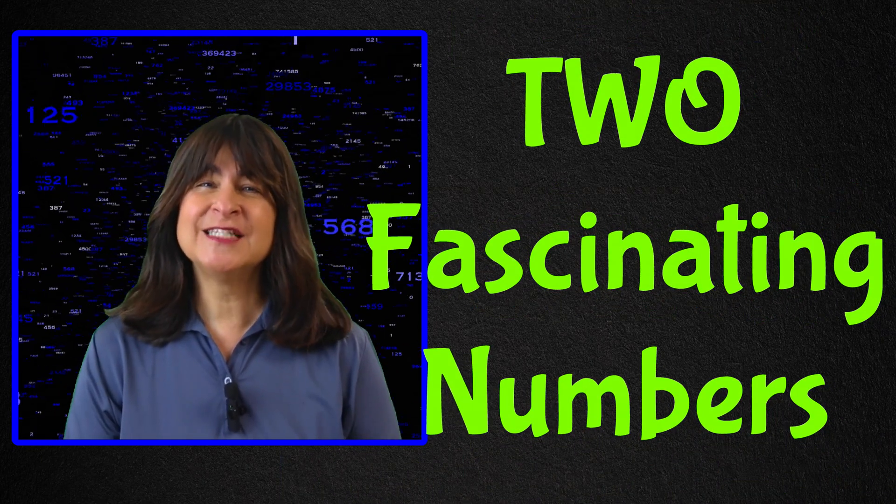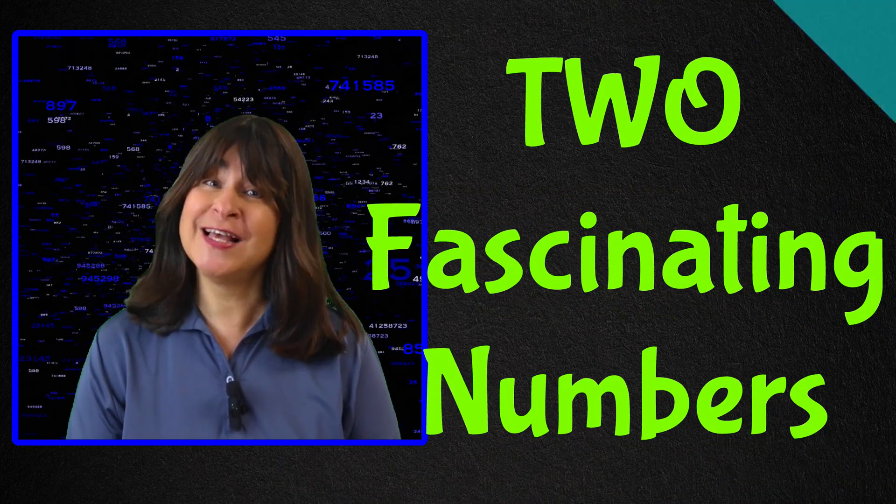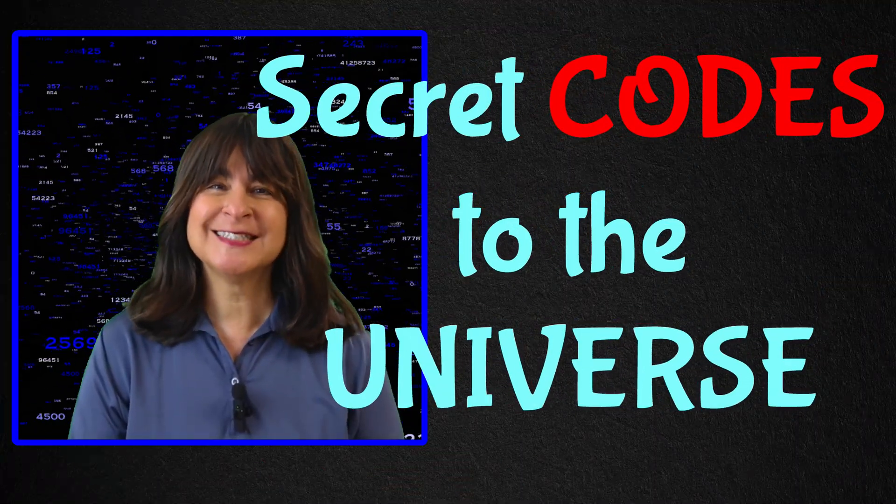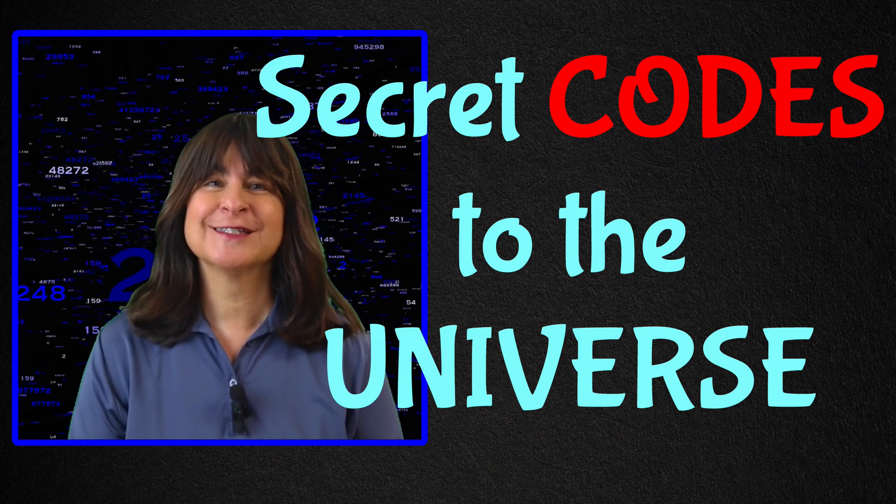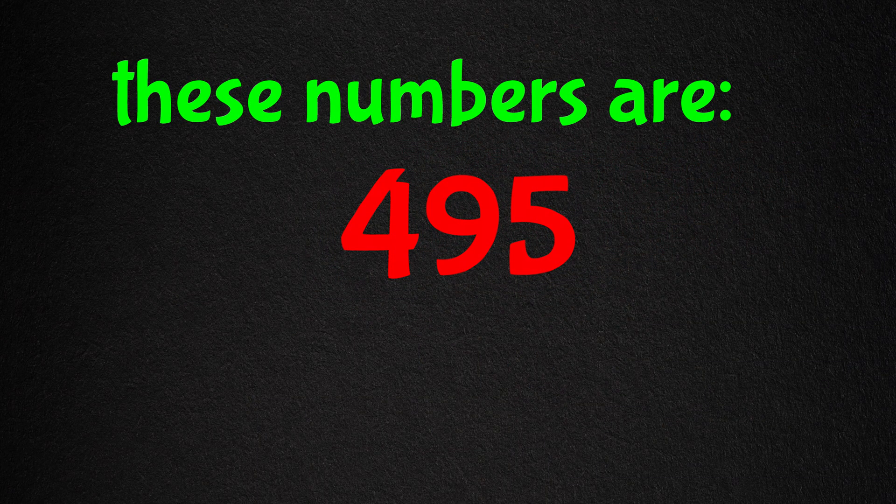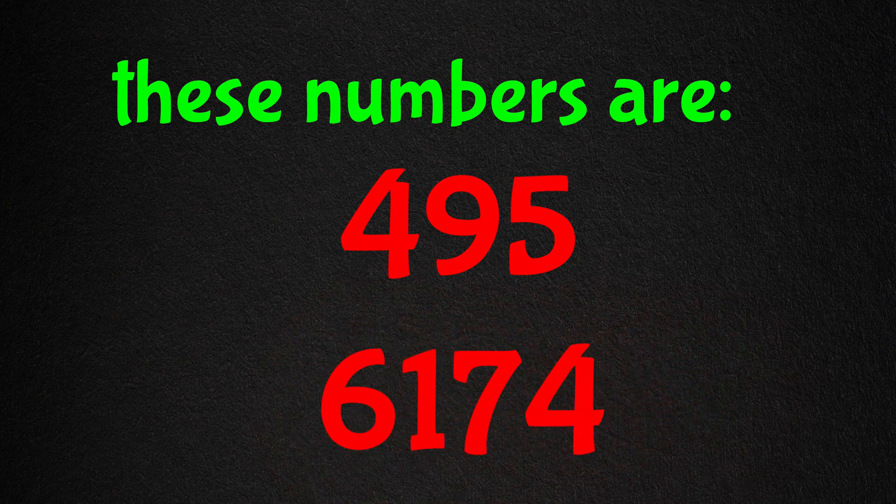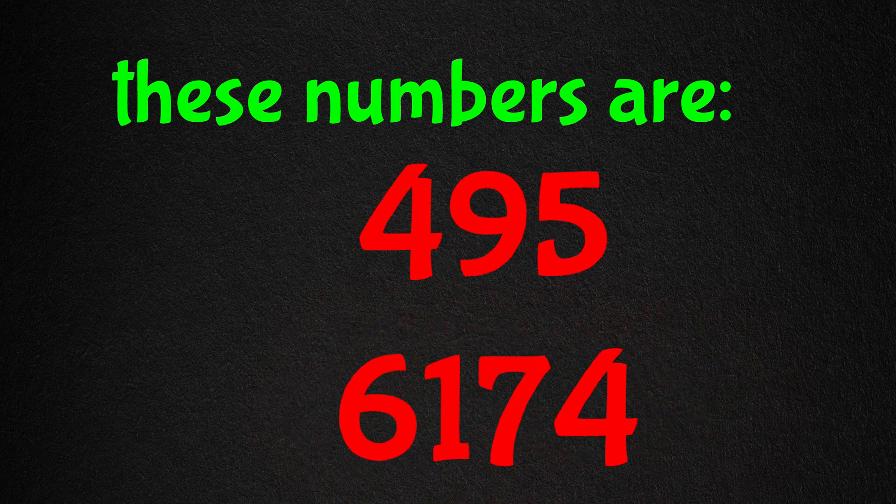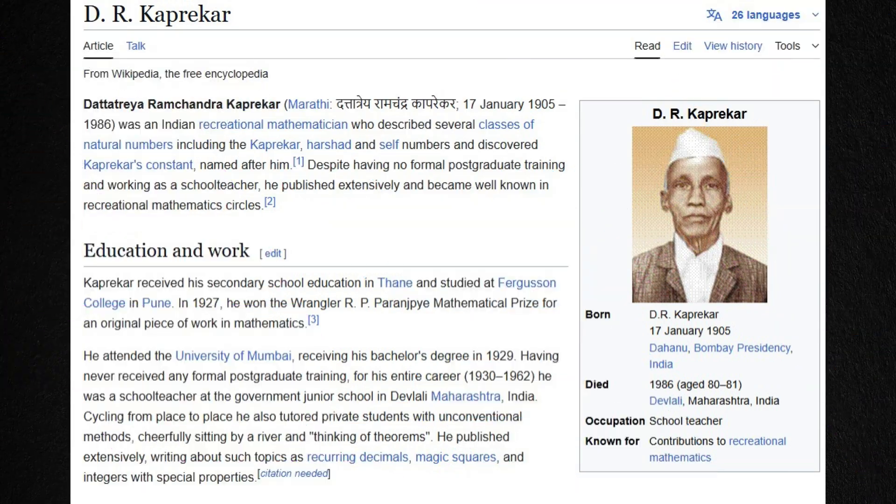Hello everyone. Today's video is about two fascinating numbers that feel like secret codes to the universe. These numbers are 495 and 6174. Two mysterious numbers discovered by the Indian mathematician D.R. Kaprekar.